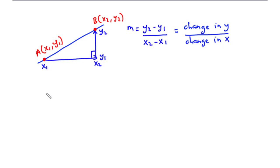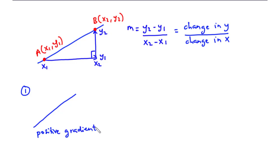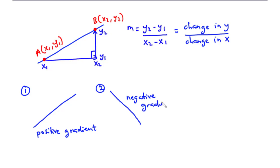A gradient can be uphill in direction — that is, the change in vertical distance going from the left up to the right — in that case we say we have a positive gradient. If the straight line extends from top left down to the right, we say we have a negative gradient. And for the third case, if the straight line is parallel to the x-axis, then we have a zero gradient.